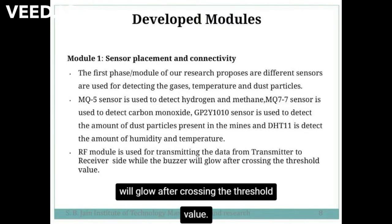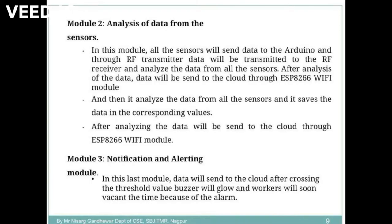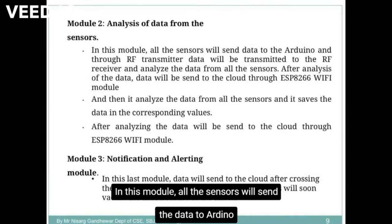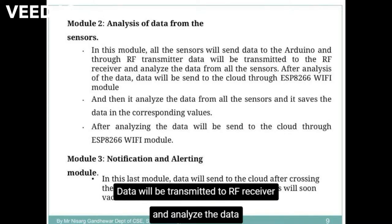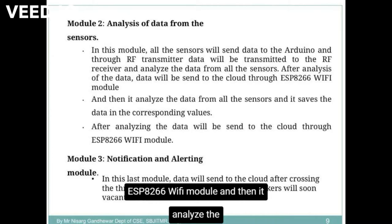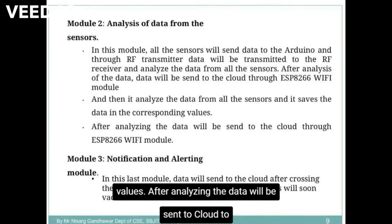The buzzer will trigger after crossing the threshold value. Module 2 is analysis of data from the sensors. In this module, all the sensors will send the data to Arduino, and through the RF transmitter, data will be transmitted to the RF receiver and analyzed. After analysis, data will be sent to the cloud through the ESP8266 Wi-Fi module, which analyzes the data from all the sensors and saves the data in corresponding values.